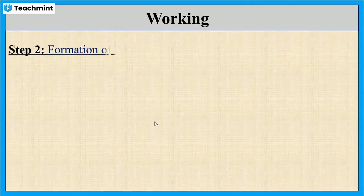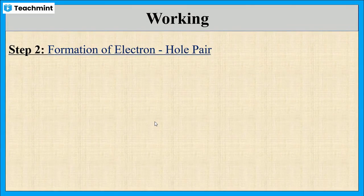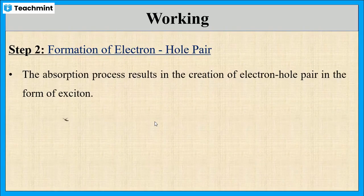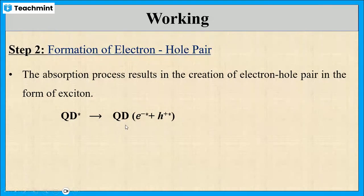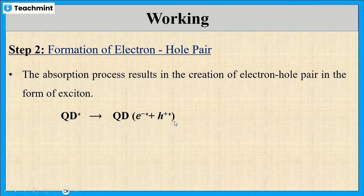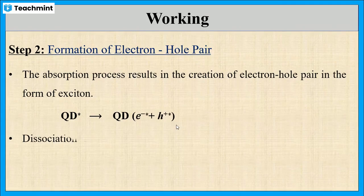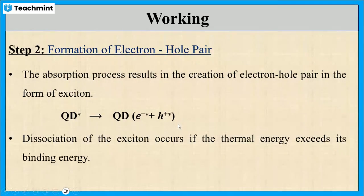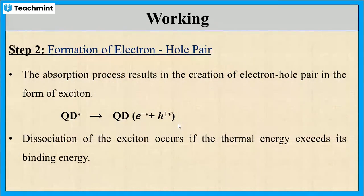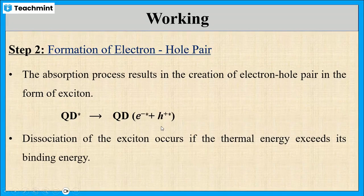In the second step, there is the formation of an electron-hole pair. That means QD* will form QD with an excited electron and an excited hole pair. The dissociation of this pair occurs only if the thermal energy received from sunlight exceeds the binding energy.